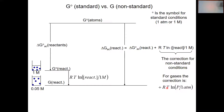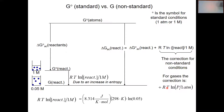Is this correction factor significant? Absolutely. If you plug in values using 8.314 joules per mole Kelvin at room temperature, 298 Kelvin, you get negative 7.42 kilojoules per mole. 7.42 kilojoules is pretty significant. So knowing the difference between delta G standard and non-standard is important.